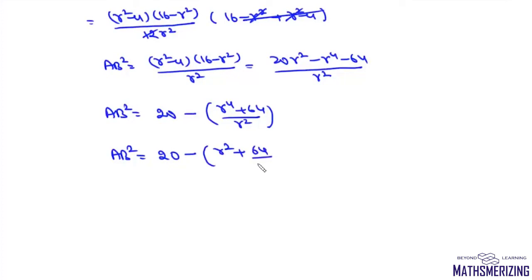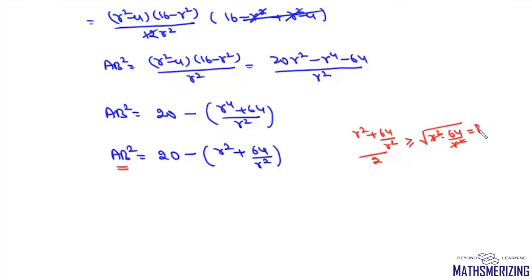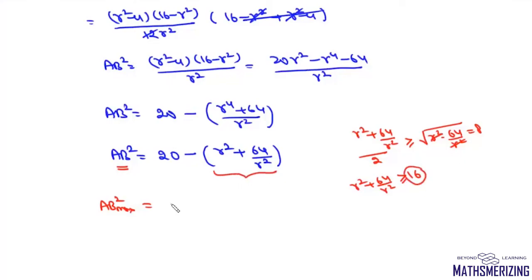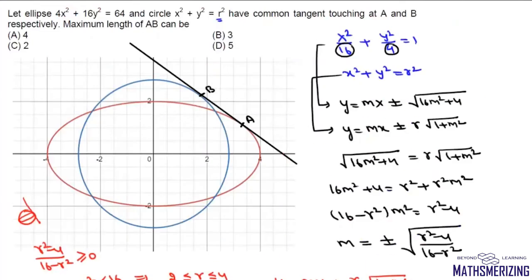To maximize AB², we need to minimize (r² + 64/r²). By the AM-GM inequality, (r² + 64/r²)/2 ≥ √(r² · 64/r²) = √64 = 8, so r² + 64/r² ≥ 16. The minimum value of 16 occurs when r² = 8. Therefore the maximum value of AB² = 20 − 16 = 4, giving maximum AB = 2.